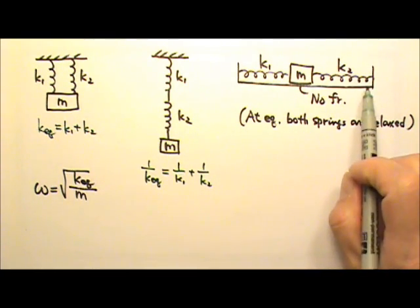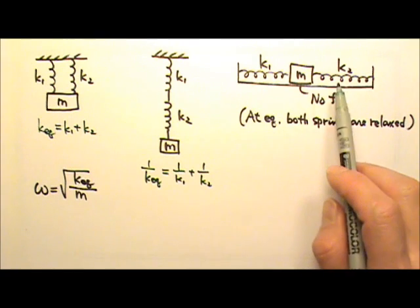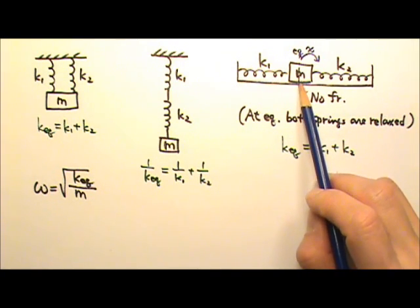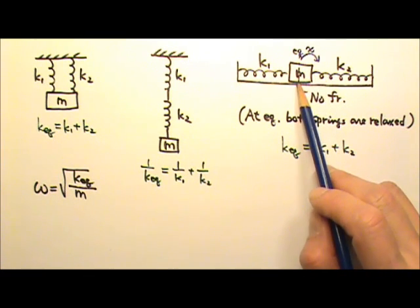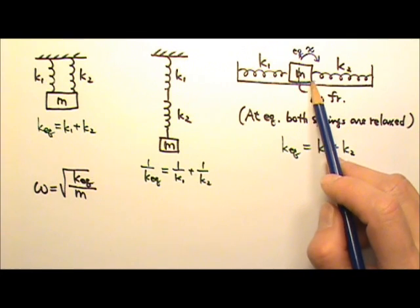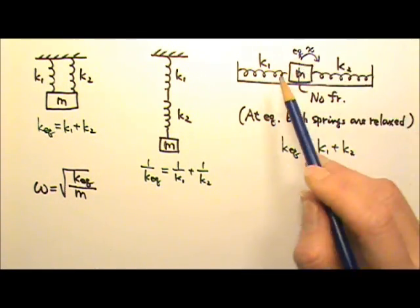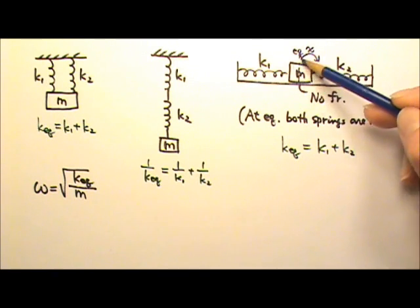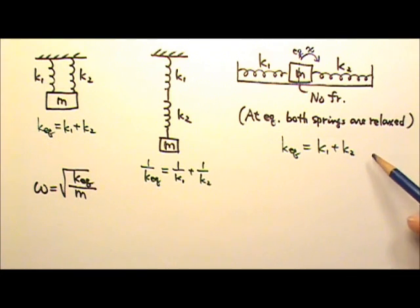In this case, we have two horizontal springs with no friction. At the equilibrium position, both springs are relaxed. The k-equivalent is k1 plus k2, because if we move this box to the right by a distance x from the equilibrium position, the restoring force experienced by the box would be k2·x to the left and k1·x also to the left. So the net restoring force acting on the box m would be (k1 plus k2) times x to the left.